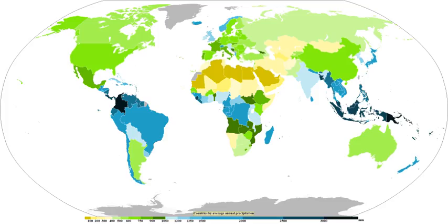The standard way of measuring rainfall or snowfall is the standard rain gauge, which can be found in 100 mm plastic and 200 mm metal varieties. The inner cylinder is filled by 25 mm of rain, with overflow flowing into the outer cylinder. Plastic gauges have markings on the inner cylinder down to 0.25 mm resolution, while metal gauges require use of a stick with appropriate 0.25 mm markings. After the inner cylinder is filled, the amount inside it is discarded, then filled with the remaining rainfall in the outer cylinder until all fluid is gone.